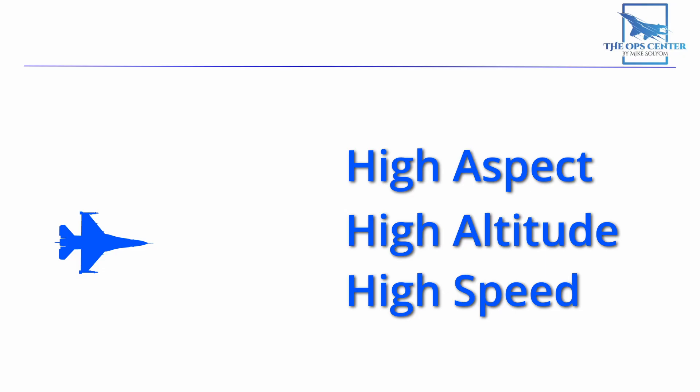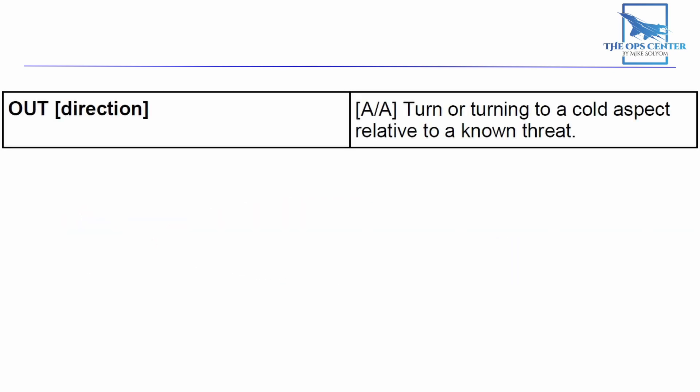Now if you know these WEZ numbers, you can build a plan around them to survive the fight. With the stern WEZ being the safest for the defending aircraft, this leads to a simple strategy for survival. Turn away from the attacker as quickly as possible. It's such an effective strategy that it even has its own name and a brevity code used by the U.S. military. It's known as an OUT.